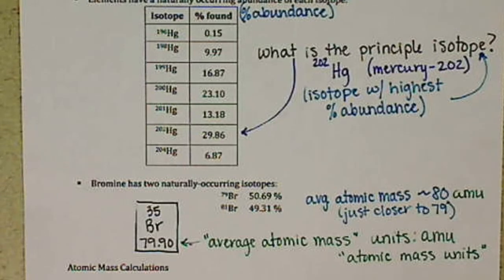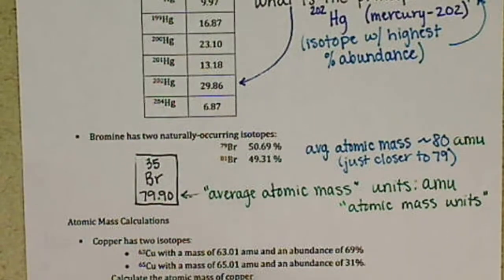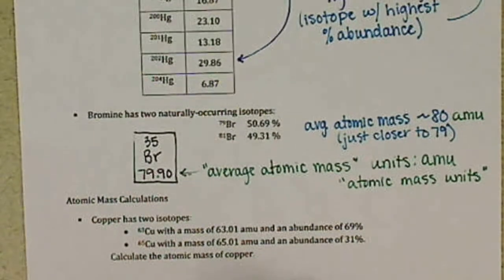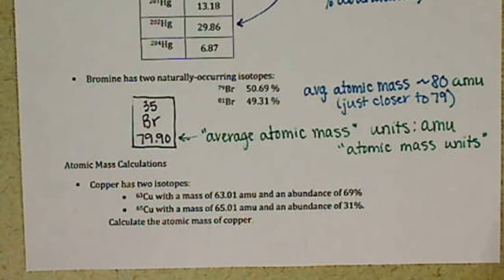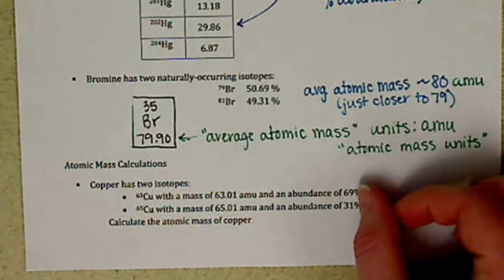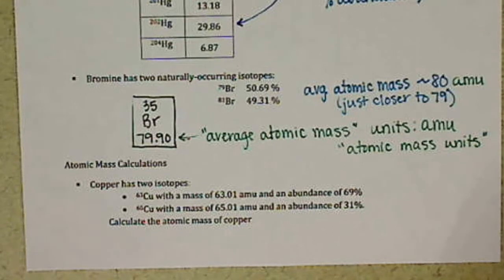So one of the things we want to practice then is we want to practice calculating our average atomic masses. Now keep in mind, remember that we always were wanting to take into account our percent abundance. So what we're going to be doing, what we're going to be calculating is called a weighted average. It has to take into account the percents here. If we just took the straight up average, adding two numbers up, dividing it by two, that's not taking into account the fact that you're going to find one more prevalent than the other.